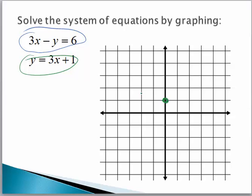There's the intercept. In this case, the slope is 3, which we can put over 1. That means I go over 1, up 3. And there is the graph of that line.